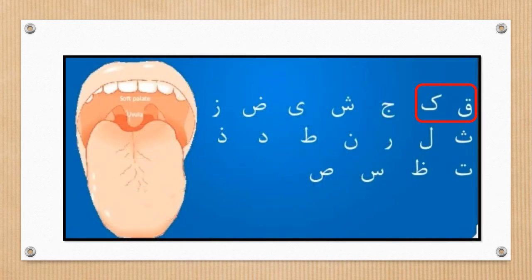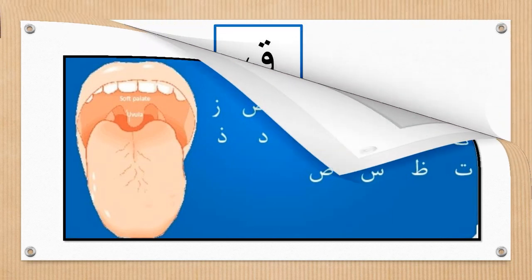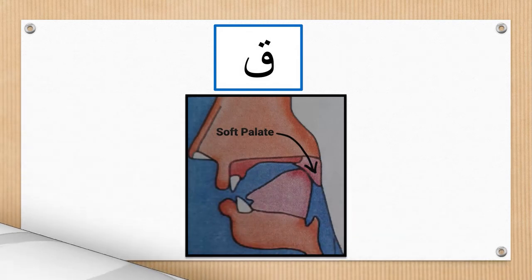There are a total of 18 letters that exit from the tongue. Today we'll be learning the letters qaf and kaf. Let's look into their makharij.